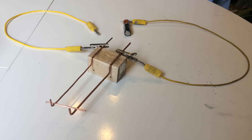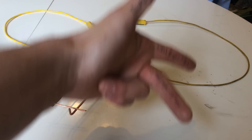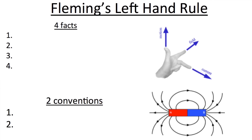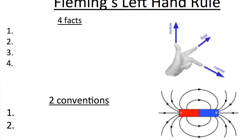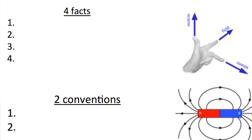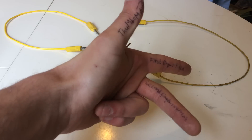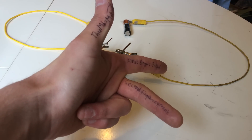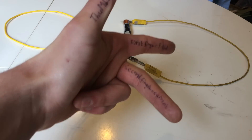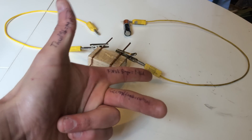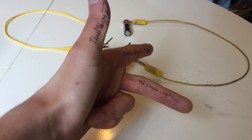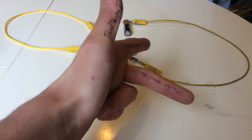In this video I'm going to be explaining how to use Fleming's left-hand rule. To use Fleming's left-hand rule there are four facts and two important conventions within physics that you need to know. The first fact is how you hold your fingers — you've got to hold them so the thumb points up, first finger pointing forward, and the second finger pointing to the side.